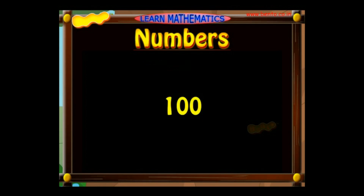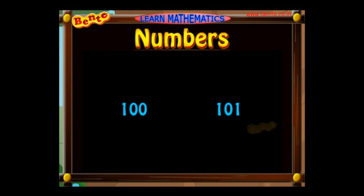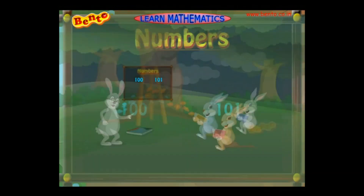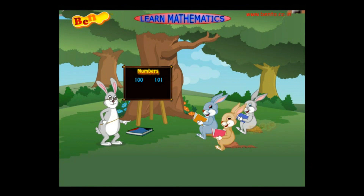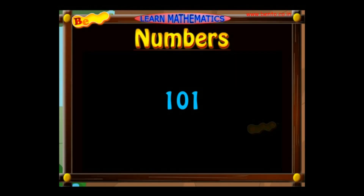The first number on the board is read as 100. The numbers 100 and 101 are examples of a three-digit number. The second number is read as 101 as it has 100 and a 1 in it. A three-digit number has three place values.